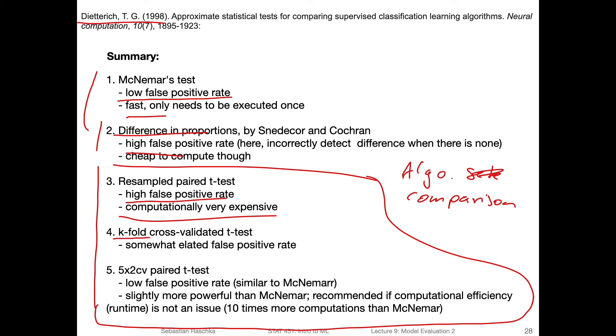A better method is the k-fold cross-validated t-test. But unfortunately, it also has a slightly elevated false positive rate, wrongly rejecting the null hypothesis even though the null hypothesis is true.